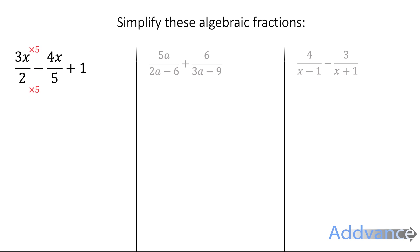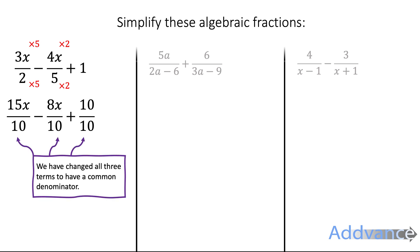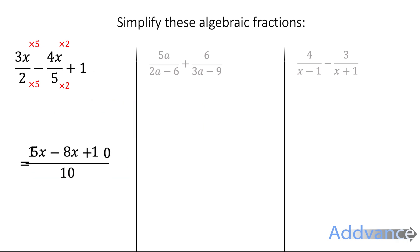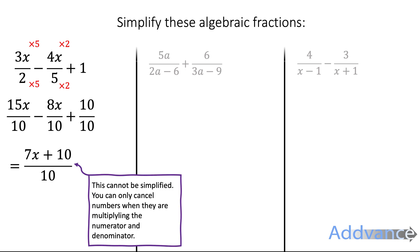For this one, we're going to multiply by 5 and multiply by 2, and you will get a common denominator of 10. The 1 can be changed to 10 tenths, and we've got a common denominator on the bottom. We add or subtract everything on the top and we're left with 15x minus 8x plus 10, which is the same as 7x plus 10 over 10. Note that because you've got a plus 10 on the top, you cannot simplify that with the 10 on the bottom — it has to be multiplied on the top to cancel with something multiplied on the bottom.